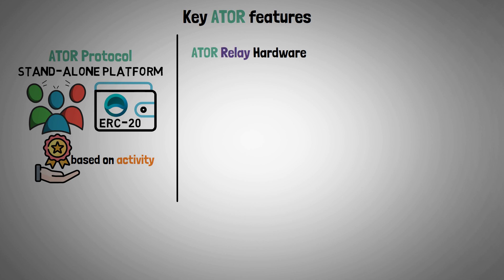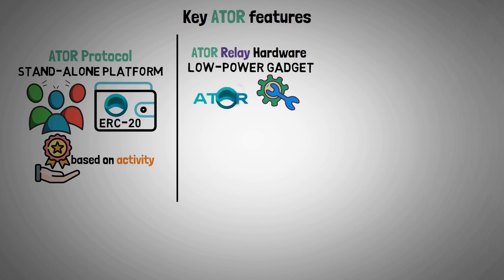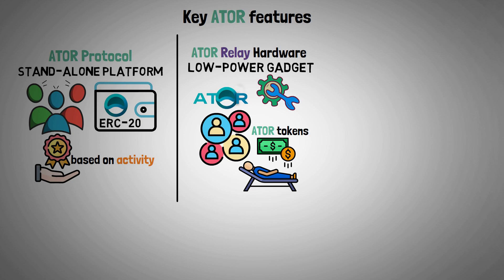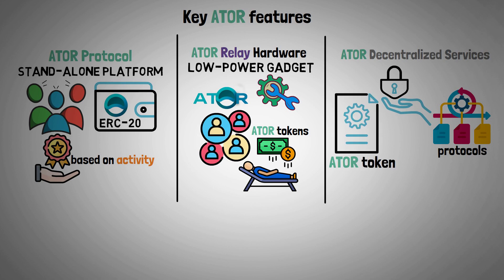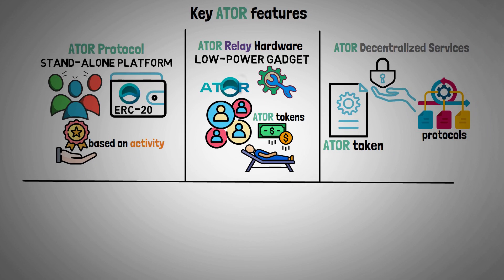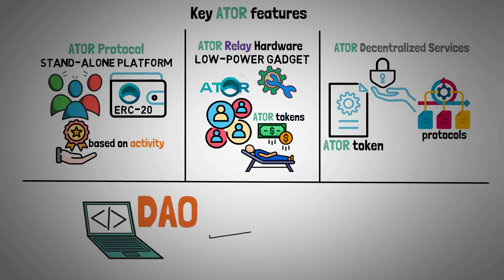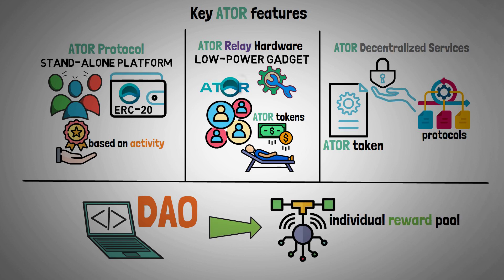Airtor Relay Hardware is a low-power gadget that can be set up to operate with the Airtor Protocol. Any user can participate and passively earn Airtor tokens using this device. The Airtor Decentralized Services offer a framework for providing specialized services built on top of the protocols, fueled through the Airtor token. Additionally, Airtor wants to develop itself into a decentralized autonomous organization that can oversee various protocols and their individual reward pools within the ecosystem.